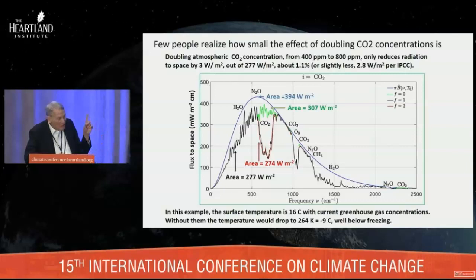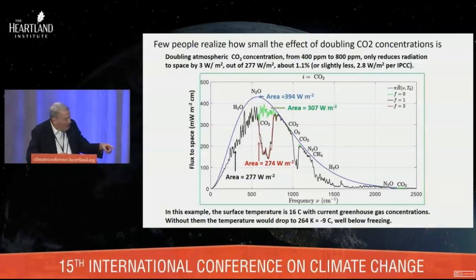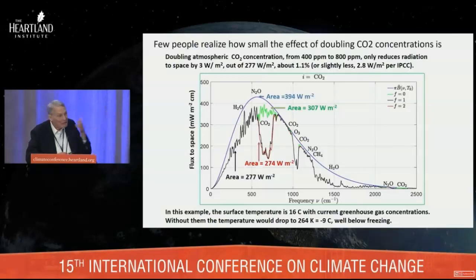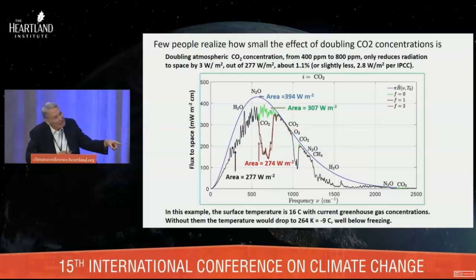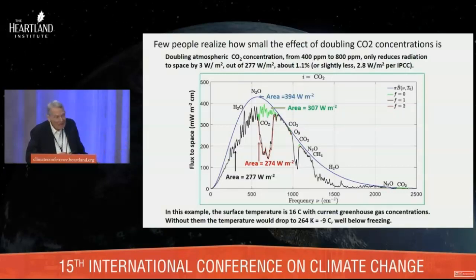If you double CO2, the difference is you go from the black curve to the red curve, which is very tiny. Very few people realize that if you double CO2, you will only change the radiation to space by about 1% — in this particular case, 1.1%. There's no dispute about this. The IPCC had done this calculation before we did. We say 3 watts per square meter; they say 2.8. So we're actually slightly more pessimistic than they are, but not by much.